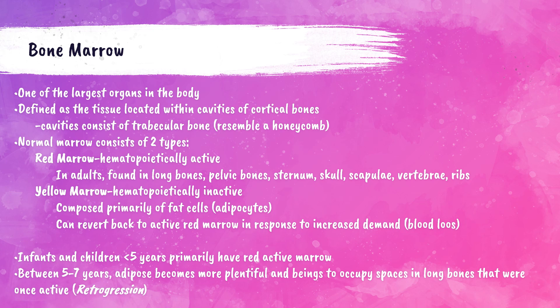Infants and children less than five years of age primarily have red hematopoietically active marrow. When the child is between five and seven years, adipose or fat becomes more plentiful and begins to occupy spaces in the long bones, replacing that red active marrow. This process is called retrogression.